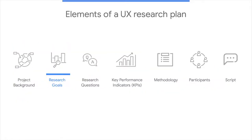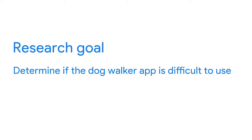Next, your plan should include research goals. Ask yourself: what design problems are you trying to solve, and how will the results of the research impact our design decisions? Use your answers to create goals for your research project. In our example, one research goal might be: determine if the dog walker app is difficult to use. We need to consider ease of use to understand why customers join our app and leave or stay.